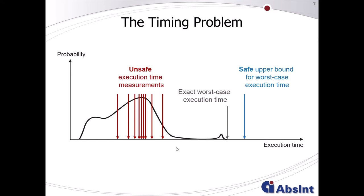If you start using traditional dynamic measurement-based approaches, you will typically end up in an area where you have a high observation probability to observe a certain execution time. In safety-critical applications, it is demanded to find an upper bound on the needed resources like timing. Unfortunately, the exact worst-case execution time is a theoretical value nobody can compute in general. You might have heard about the halting problem, which is a kind of reduced problem to this one.